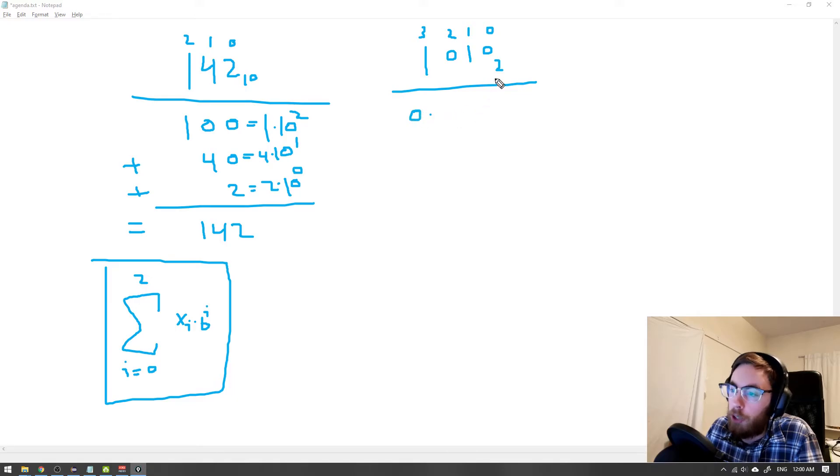So we take 0 times the base 2 to the power of the position, which is 0. And then we take 1 times 2 to the power of 1, which is the position here. Then we take this 0 here, and we multiply it by 2, the base, to the power of 2. And at the end we take 1 times 2 to the power of the position 3.